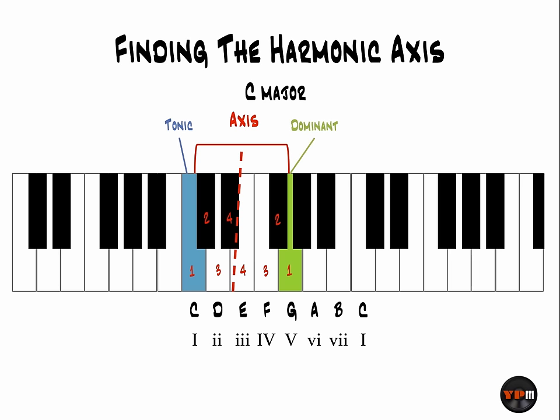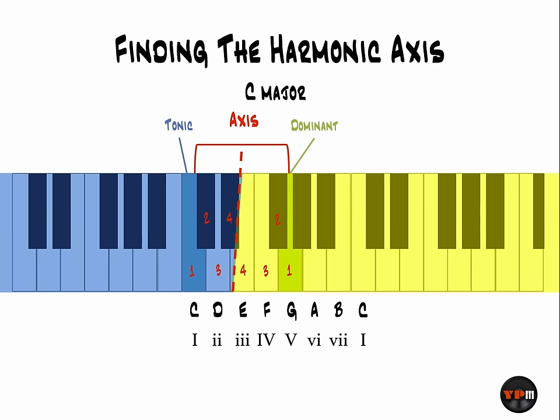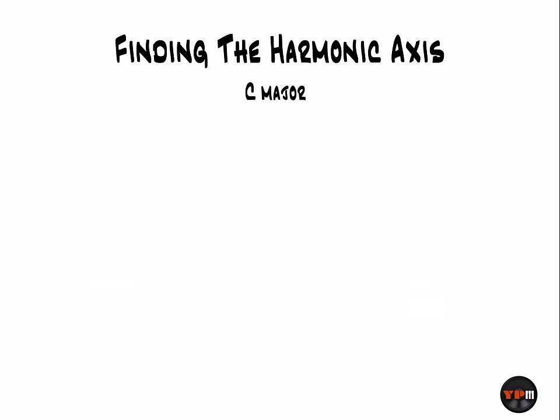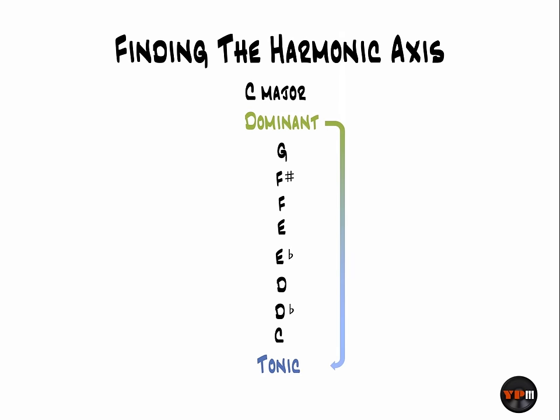According to Levy, notes above this axis are positive and below it are negative. This is where positive and negative harmony polarity come from. Positive notes have a reflection on the other side of the axis. Here's another way of visualizing this: here are all the notes from the tonic to the dominant, with the tonic at the bottom and the dominant at the top. The dominant has the strongest tendency to want to resolve back to its home base, the tonic.